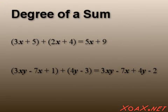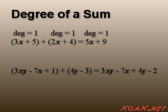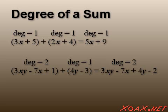Notice that in our first sum, we added two first degree polynomials and the result was a first degree polynomial. In the second sum, we added a second and a first degree polynomial and the result was a second degree polynomial. In both cases, the sum was a polynomial with the degree equal to the greater of the two polynomials that were added.